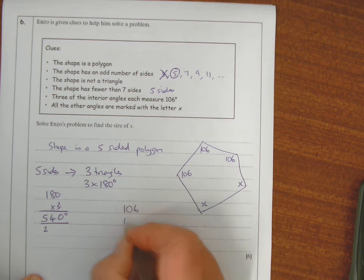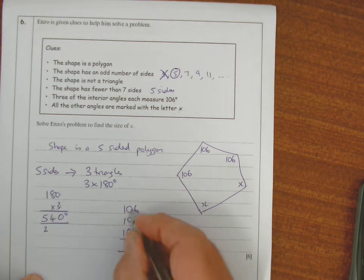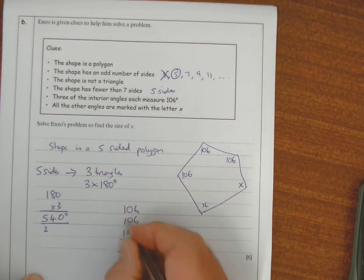So if I add up the three 106s, that's 6, 12, 18 carry 1, then 3, 1, 8. That gives 318.